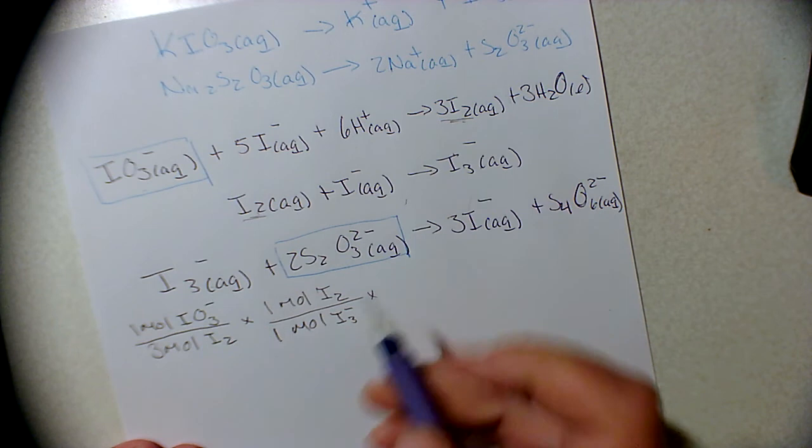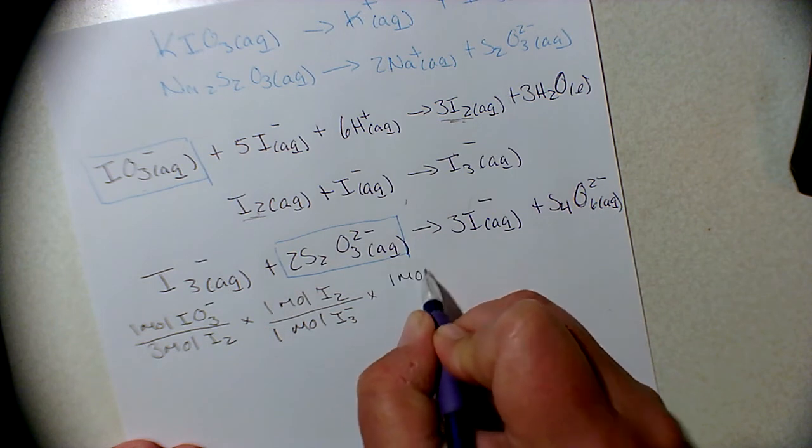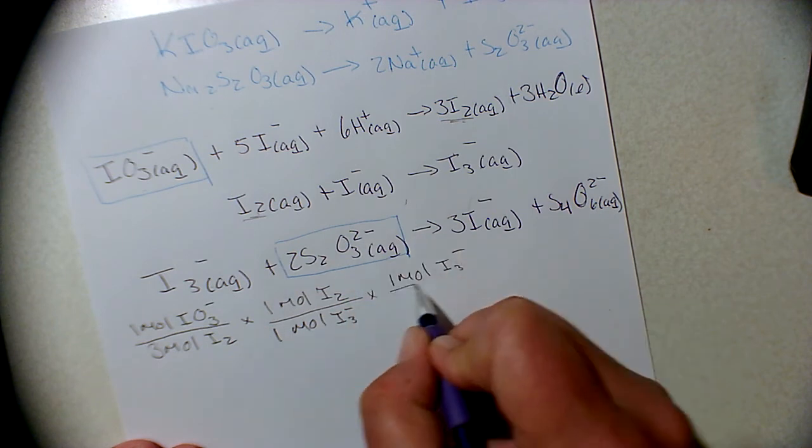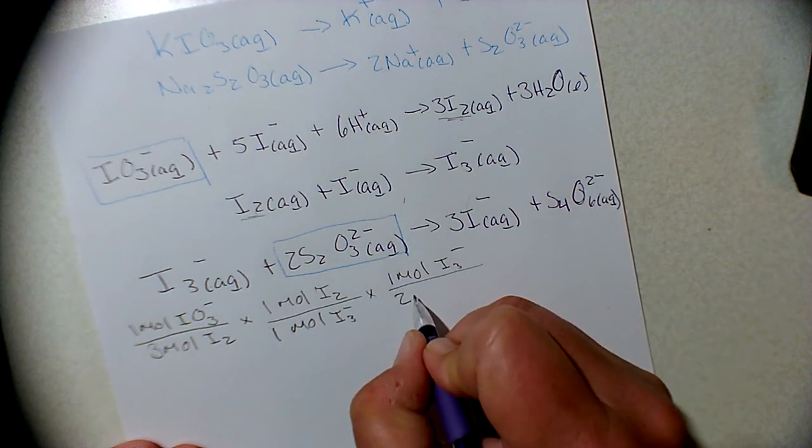Now we come over here, we have one mole of I3 minus to two moles of thiosulfate, two moles S2O3 2-minus.